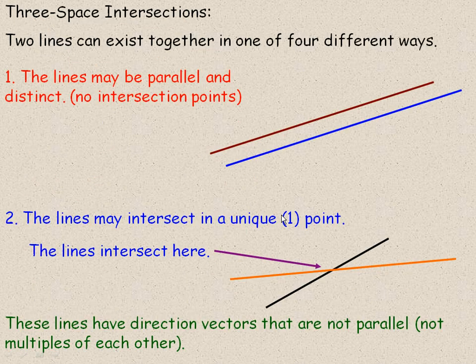Now onto three-dimensional space. There's four different ways, because we're going into, we added another dimension here. There's four different ways two lines can exist in three-dimensional space. So first of all, the lines may be parallel and distinct. Again, distinct means they're different lines, in which case they have no intersection points.